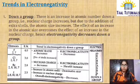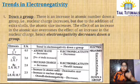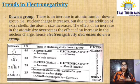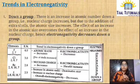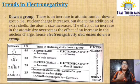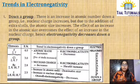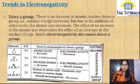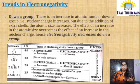Trends in electronegativity: down a group, from top to bottom, electronegativity decreases. There is an increase in atomic number down a group, so nuclear charge is also increasing. But due to the addition of extra shells, the atomic size is increasing. Down a group, atomic size is increasing, and since atomic size is inversely proportional to electronegativity, electronegativity decreases. The effect of an increase in atomic size overcomes the effect of an increase in nuclear charge.